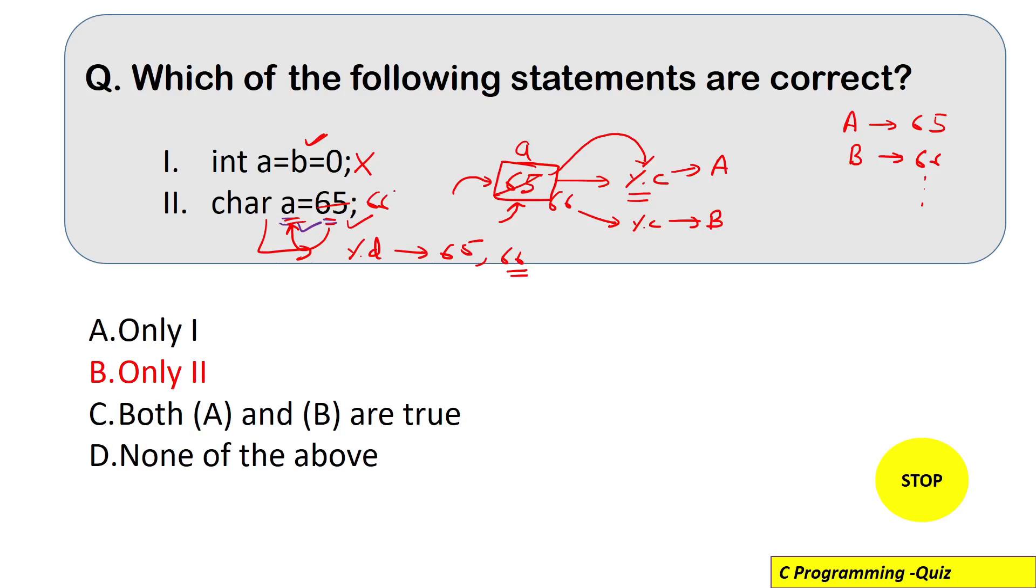So you can print the integer values or the character value for a particular character variable. So that's why only option B is correct. So I hope you have understood the explanation.